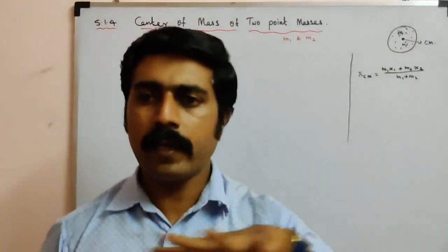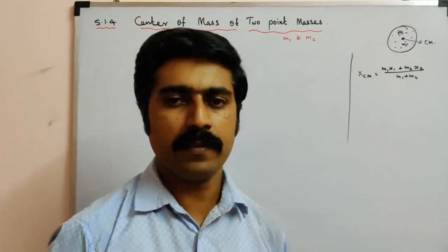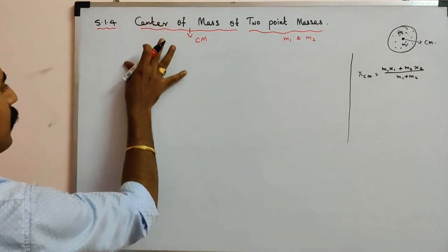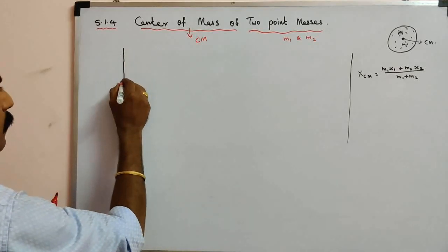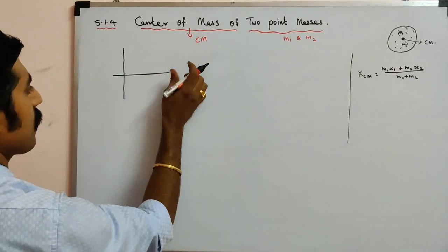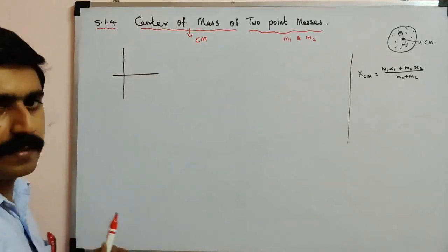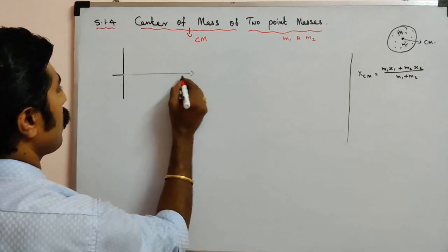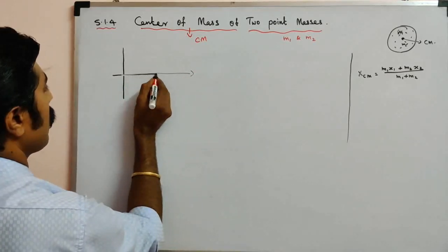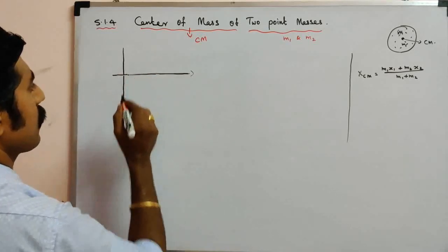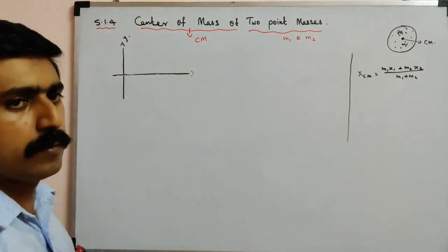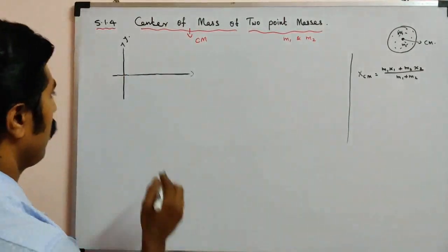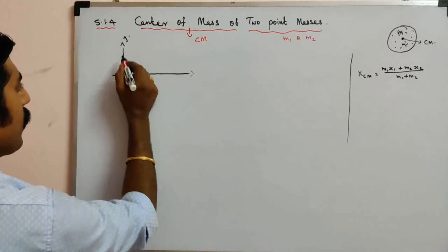This is the coordinate system. The coordinate axis — this is the x-axis, and this is the y-axis. So these are the two axes of the coordinate system.